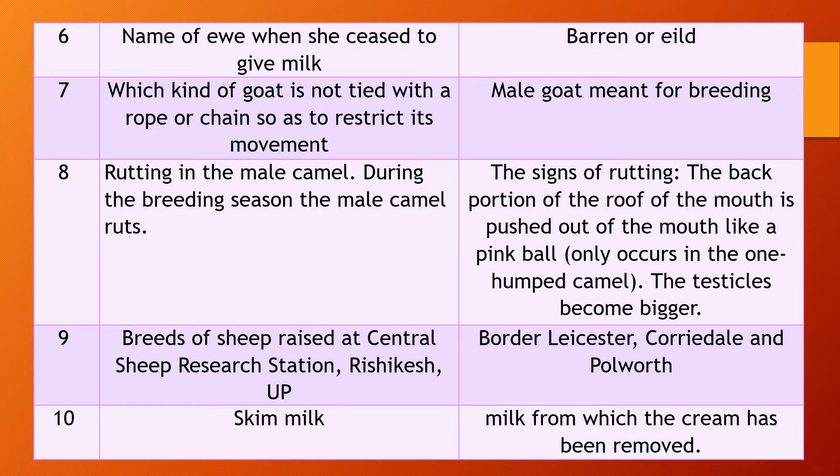Question 7. Which kind of goat is not tied with a rope or chain so as to restrict its movement — that means which type of goat is kept loose? Important question. Answer: the male goat meant for breeding is not tied but kept loose.